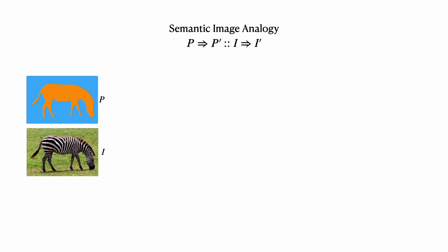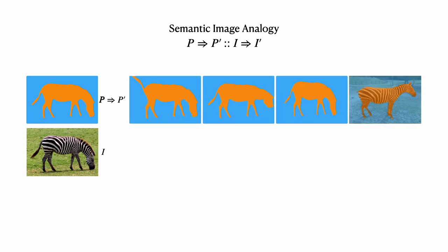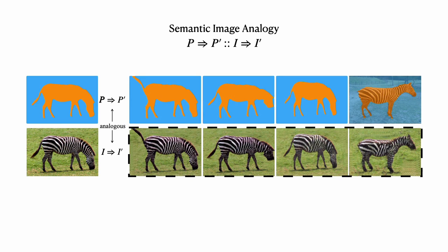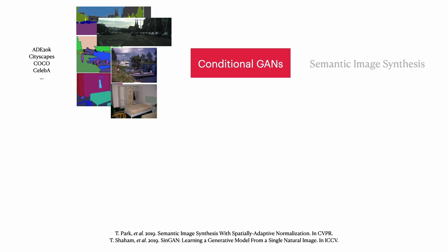Given a source image I and its segmentation map P, along with another target segmentation map P-prime, the goal is to synthesize a new image I-prime that matches the appearance of the source image as well as the semantic layout of the target segmentation. In practice, we can either edit the source segmentation map P or provide another image with a similar context to obtain the target segmentation map P-prime. Besides previous image analogy algorithms, generative models like GANs may serve as potential solutions. With a large training dataset, conditional GANs can build the mapping between class labels in segmentation maps and the corresponding appearances of instances. However, the class labels are predefined and appearances are determined by the training set, which limits the generalization capability of these models in the wild.